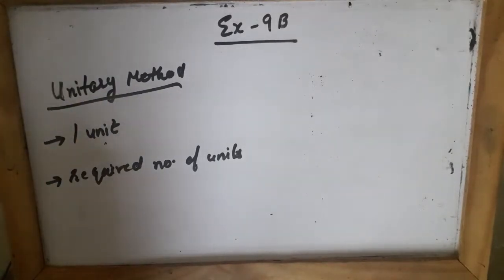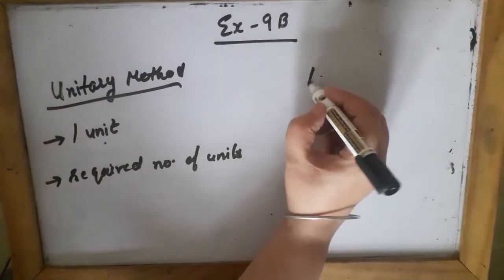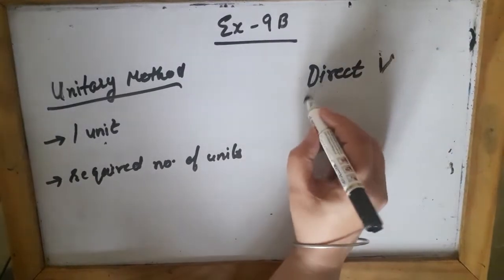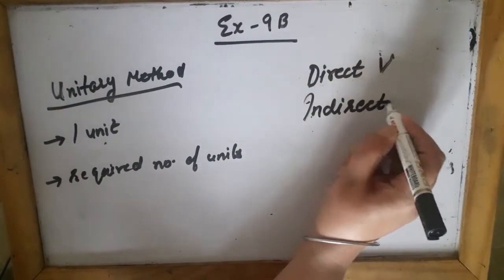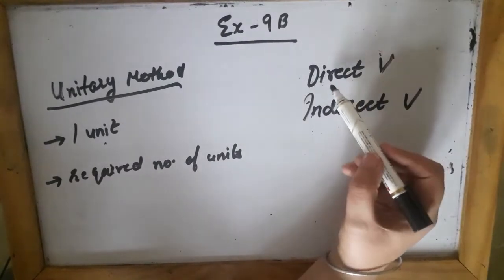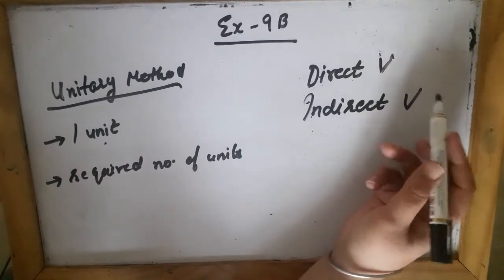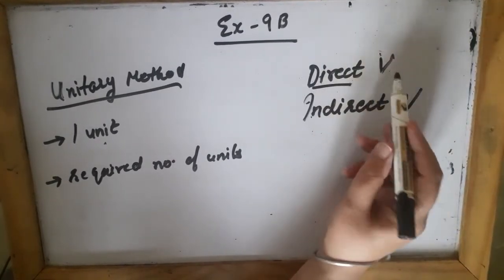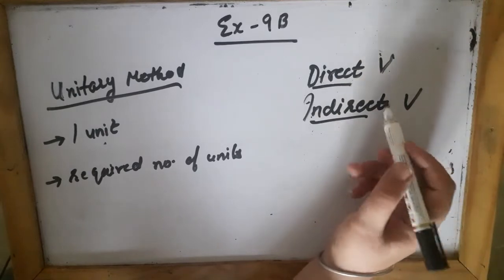In Unitary Method we come across two types of variations. One is direct variation and the second is indirect variation. We can also call it direct proportion or inverse proportion, indirect proportion.